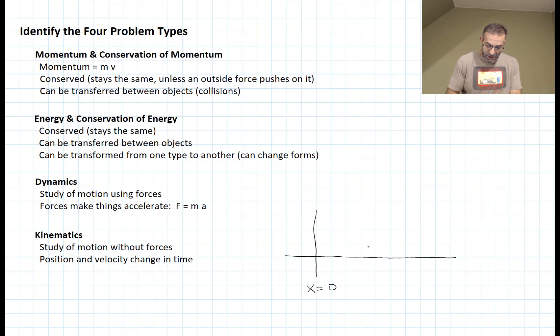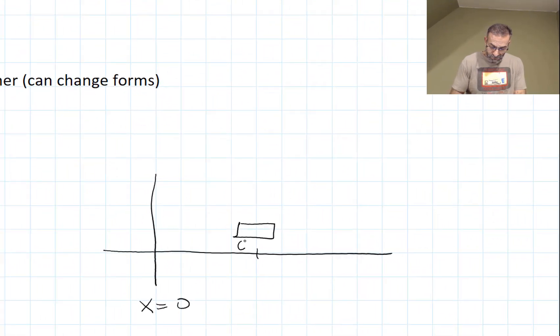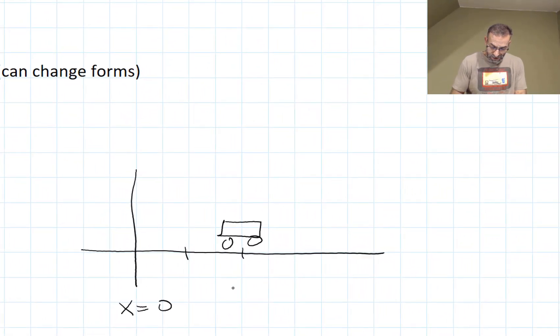And our object is over here at x equals 2 meters, and it's moving. It always moves with the velocity of 3 meters per second. At this instant in time, it just happens to be at x equals 2 meters. Well, one second later...